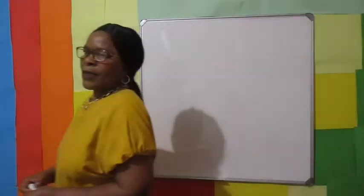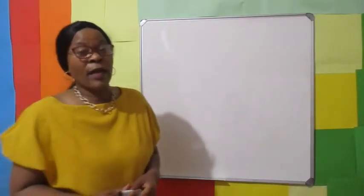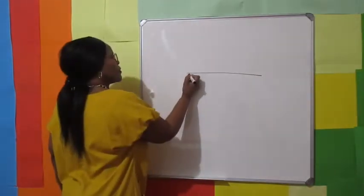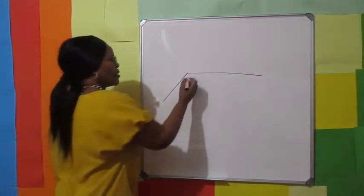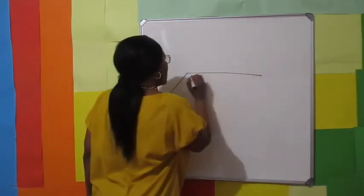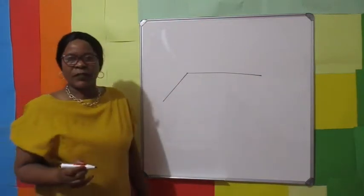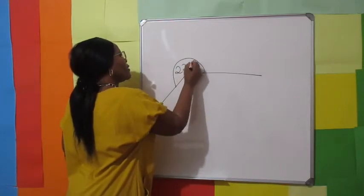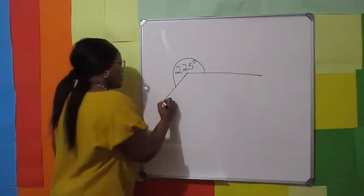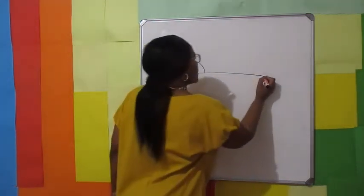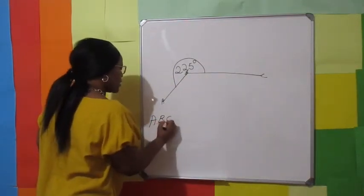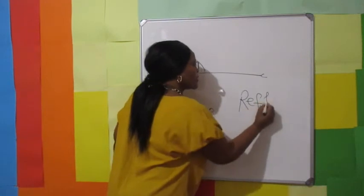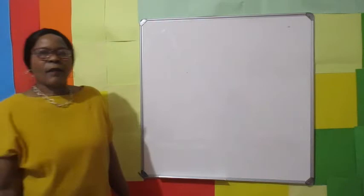Now let's look at an angle that is greater than 180 degrees but less than 360 degrees. From this point to this point is 180 degrees plus 45 degrees, which gives us 225 degrees. Angle ABC is 225 degrees, and it is called a reflex angle.